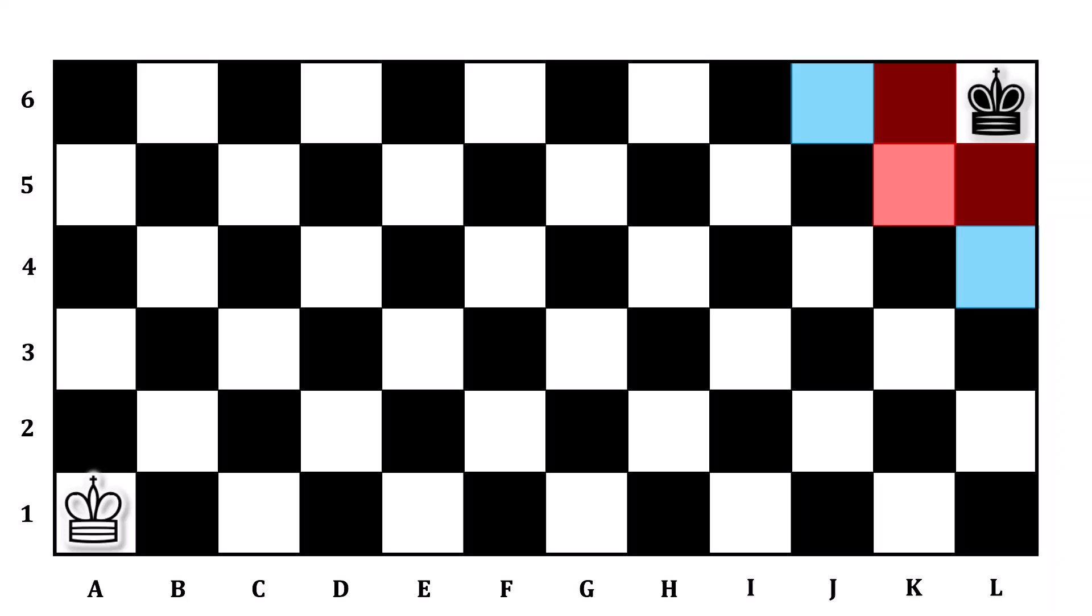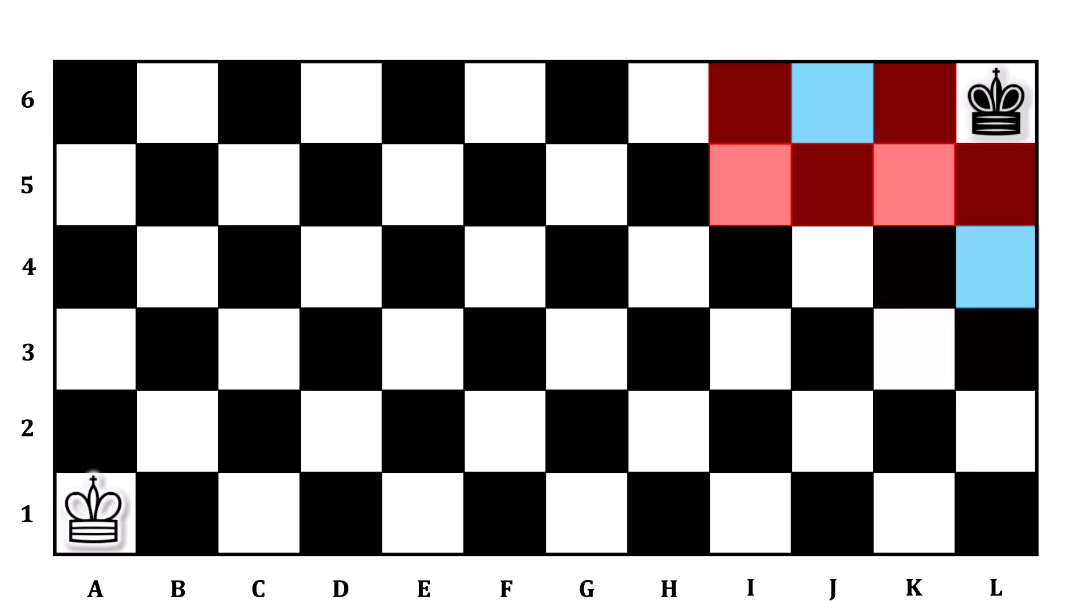Because J6 and L4 are winning squares, you cannot put yourself in a situation where your opponent would land on them on their next turn. For J6, that means that I5, I6, and J5 are all losing squares. If you placed the king on any of those on your turn, your opponent follows by moving to J6, and therefore will eventually win the game. Likewise, K3, K4, and L3 are losing squares. If you finish the turn by putting the king there, you will have your opponent move to L4 on the subsequent move, and you will ultimately lose.